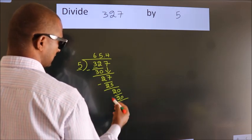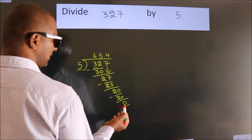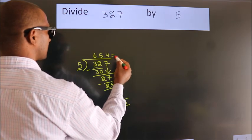Now we subtract. We get 0. We got remainder 0, so this is our quotient.